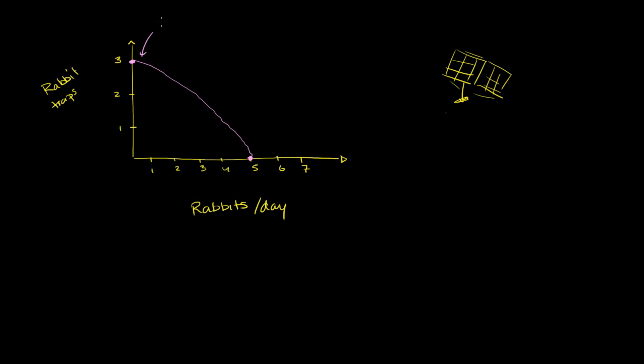So this is our current production possibilities frontier. So I'll call this PPF, production possibilities frontier. And I'll put a little 0 subscript there. That's our starting point. So he could sit anywhere over here, and he would have achieved productive efficiency anywhere on this curve. But as we saw, if he just spent all of his time doing this over here, he'll never get any rabbit traps. And so he won't be able to change the productive possibility frontier.